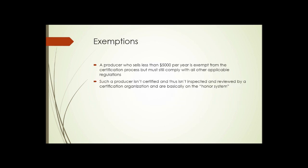There are exemptions: a producer who sells less than five thousand dollars per year worth of goods is exempt from the certification process, but must still comply with all of the other regulations — like what can be applied to the crops — as laid out in the handbook. Such a producer isn't certified and thus isn't inspected and reviewed by a certifying organization, so they're essentially on the honor system.